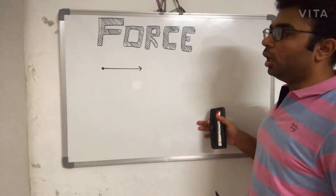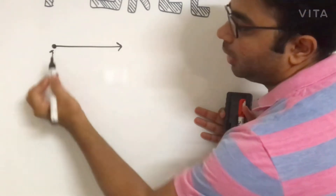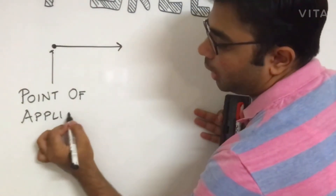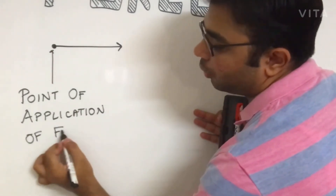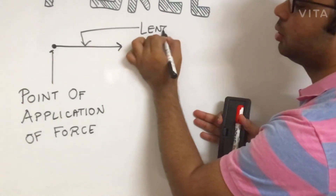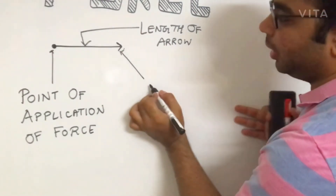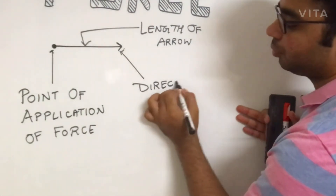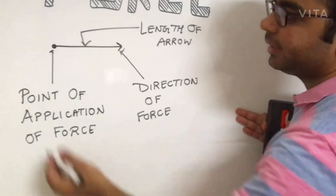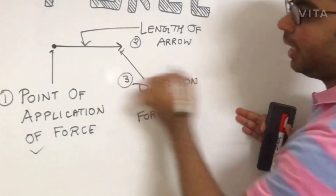An arrow is drawn to represent a force. In this arrow there are three main things. The first is the starting point, termed the point of application of force. The second is the length of the arrow, which represents the magnitude of the force — that is, how much force is being applied on an object. The third is the arrowhead, which shows the direction of the force.